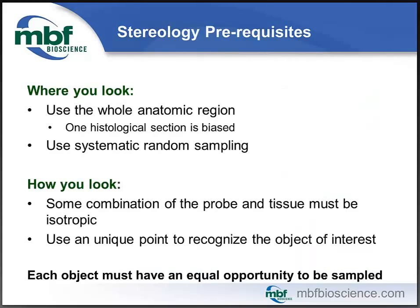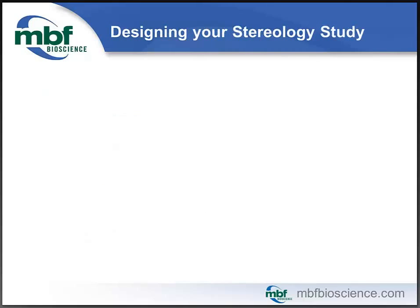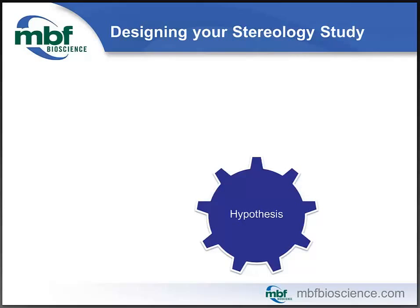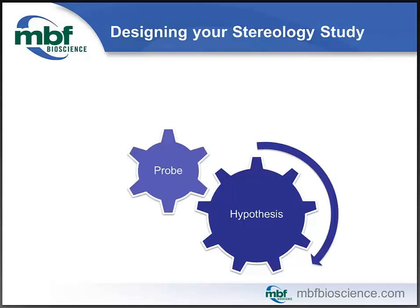Stereology has a number of prerequisites that must be considered prior to starting your experiment. The most important is that each object must have an equal opportunity to be sampled — simply put, if you can't see it, you can't count it. There are two aspects that really matter: where you look, so you need to use the whole anatomic region, and how you look, so some combination of your probe and your tissue must be isotropic. You're going to use a unique point to recognize the object of interest. An experiment first starts with a hypothesis, and with your question in mind, how you quantify depends in no small measure on how you prepare your tissue.